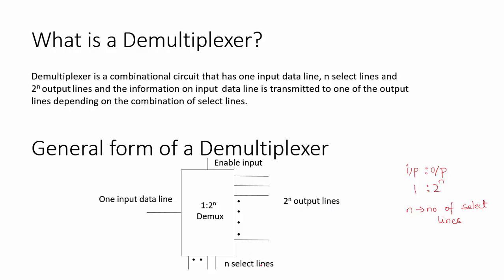It has n select lines and one enable input — the number of enable inputs can be one or more than one. So the general form of the demultiplexer is 1-to-2^n, and depending on the combination of the select lines, this input data line gets connected to one of the outputs.